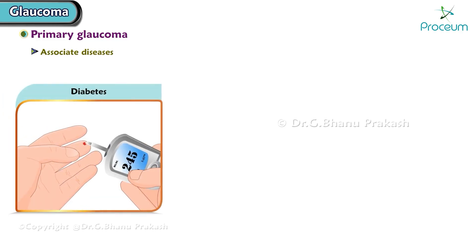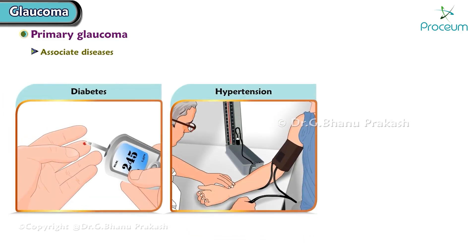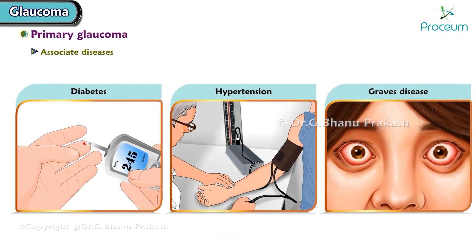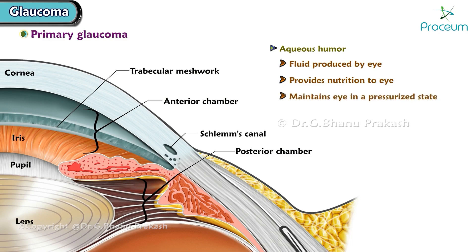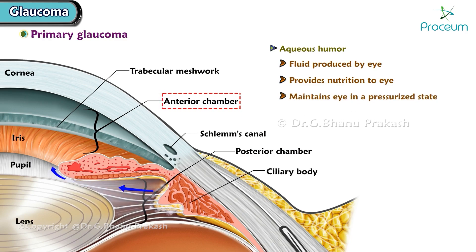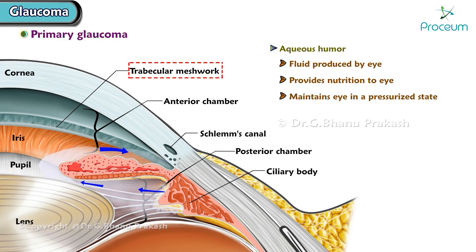Other diseases that predispose to primary open angle glaucoma are diabetes, hypertension, and Graves' disease. Aqueous humor is a fluid produced by the eye that provides nutrition to the eye and maintains it in a pressurized state. Aqueous humor flows from the ciliary body into the anterior chamber, out through the trabecular meshwork.